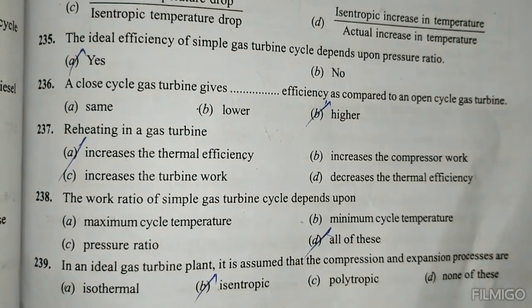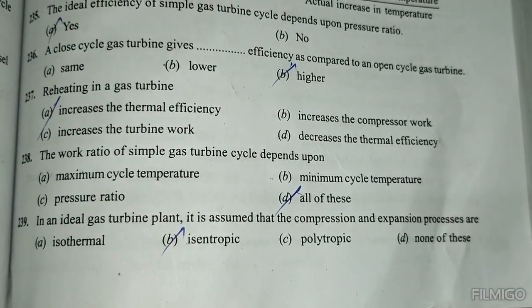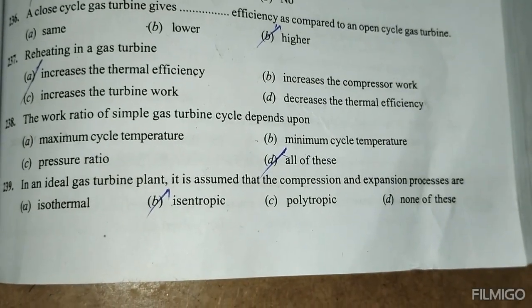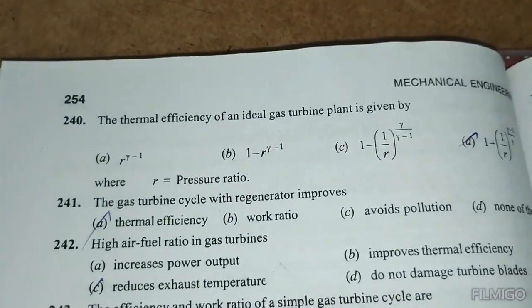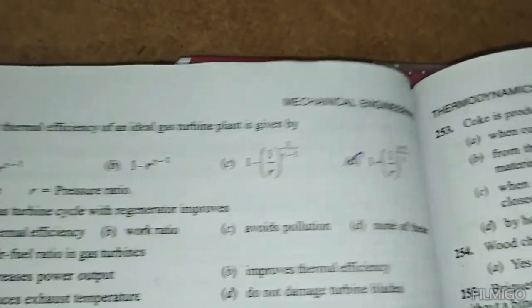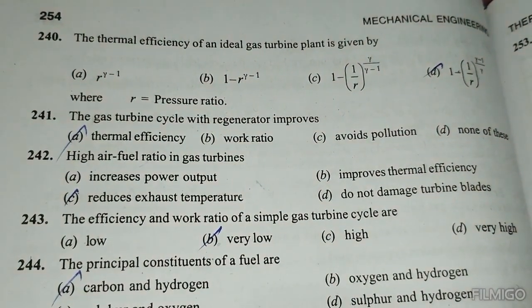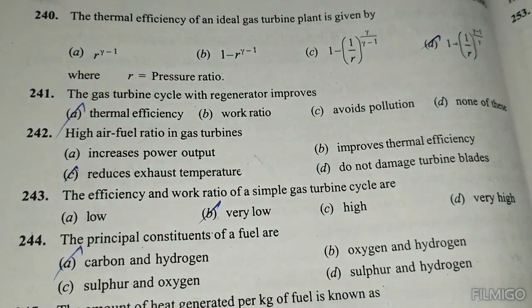Reheating in a gas turbine increases the thermal efficiency. The work ratio of a simple gas turbine cycle depends upon all of the above. In an ideal gas turbine plant, it is assumed that compression and expansion processes are isentropic. The thermal efficiency of an ideal gas turbine plant is given by 1 - 1/R^((γ-1)/γ). The gas turbine cycle with a regenerator improves thermal efficiency. High air-fuel ratio in the gas turbine reduces exhaust temperature.